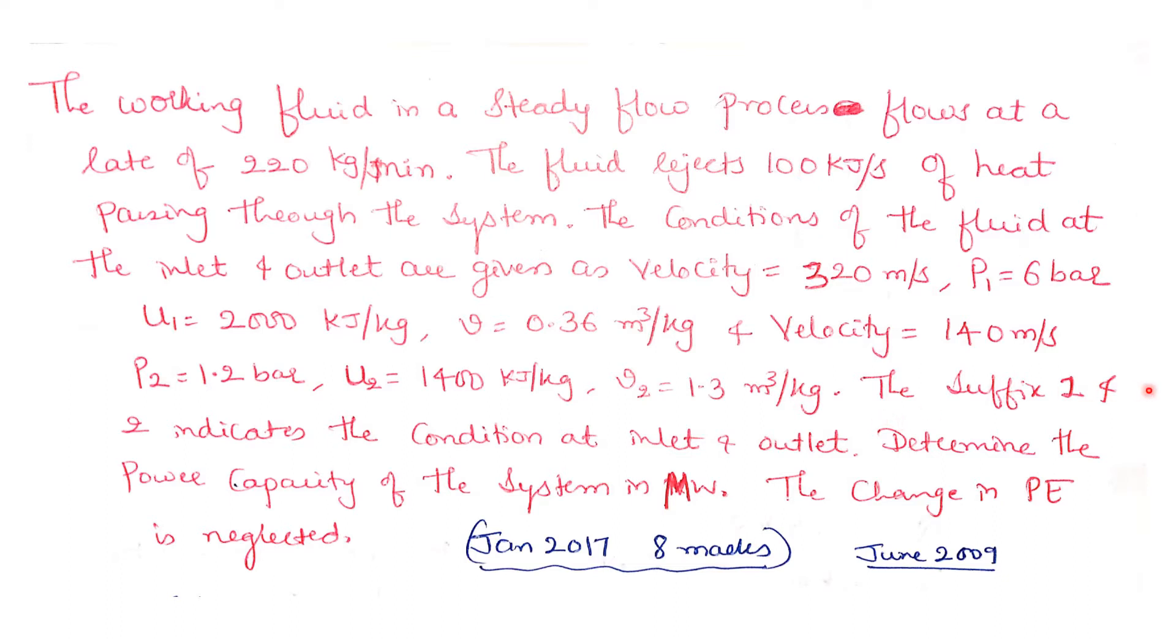The suffix 1 and 2 indicates the conditions at the inlet and outlet. Determine the power capacity of the system in megawatts. The change in potential energy is neglected. This question was asked in January 2017 for 8 marks and repeated in June 2009.